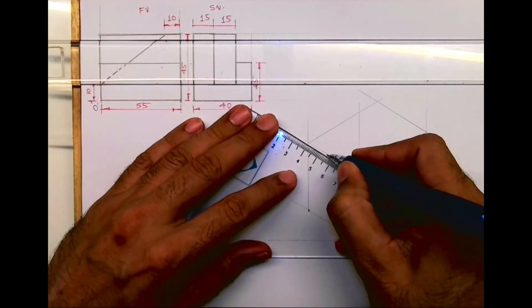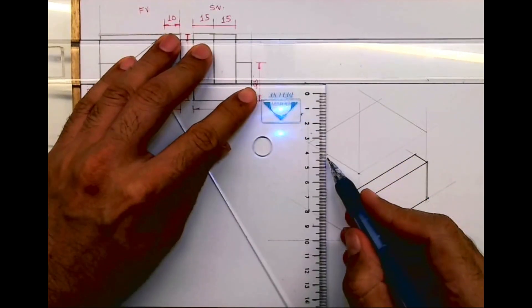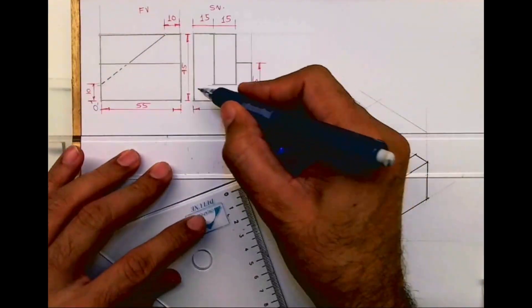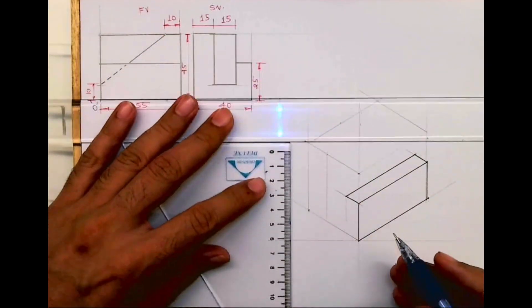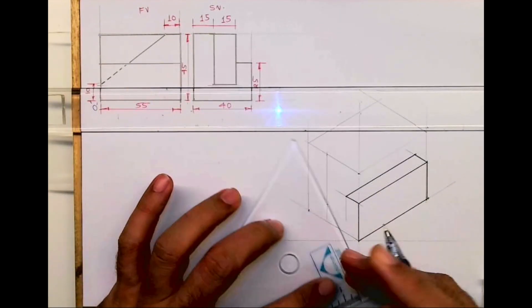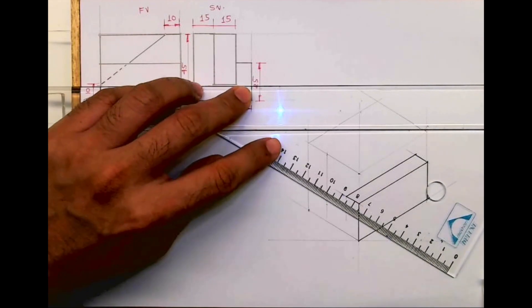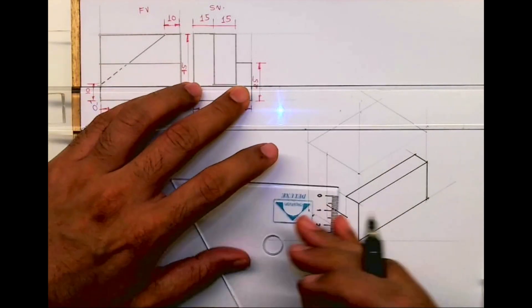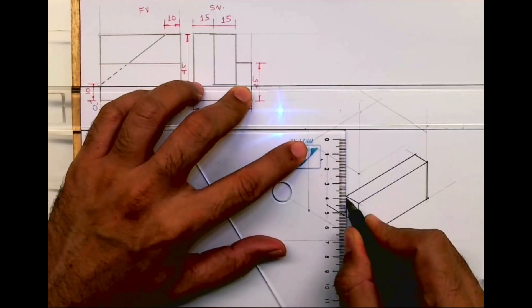From here you take 15 and draw this line down. Then take 10mm from the bottom. What we are trying to do is draw that shape. It's not exactly like a U but just a U kind of shape where one part is shorter.